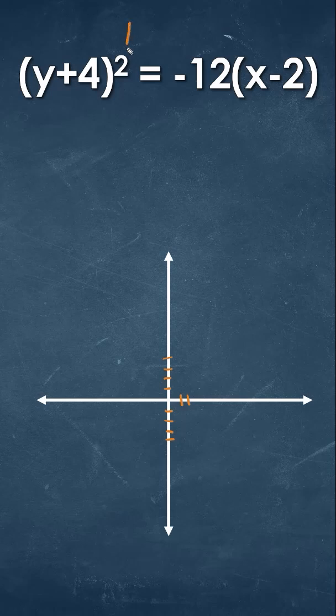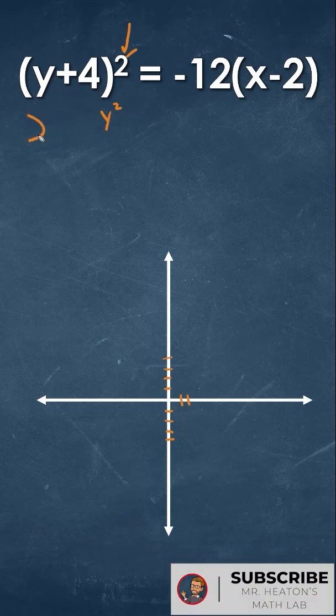To graph this parabola in standard form, the first thing we want to do is figure out where that squared value is. Since it's with the y squared, that's going to tell us that we'll have a parabola that either opens up to the left or to the right.